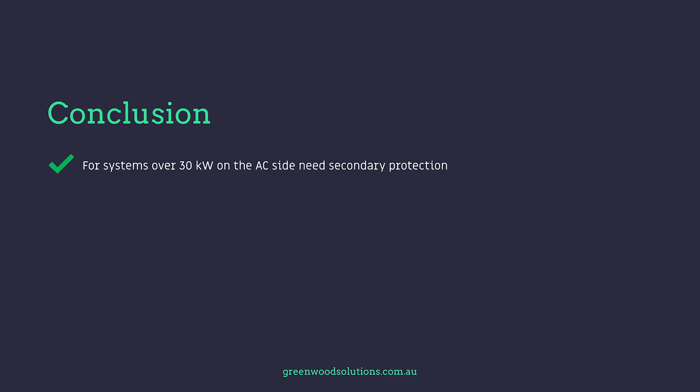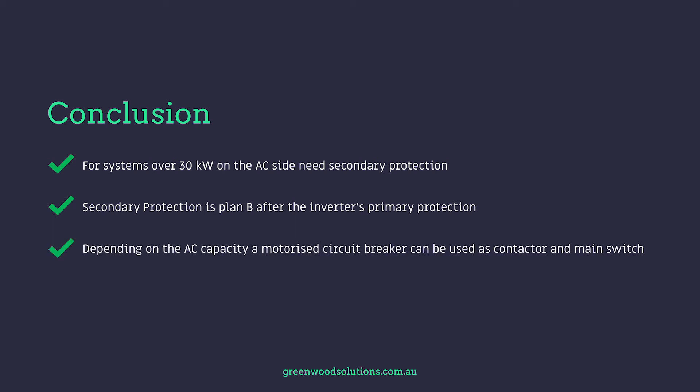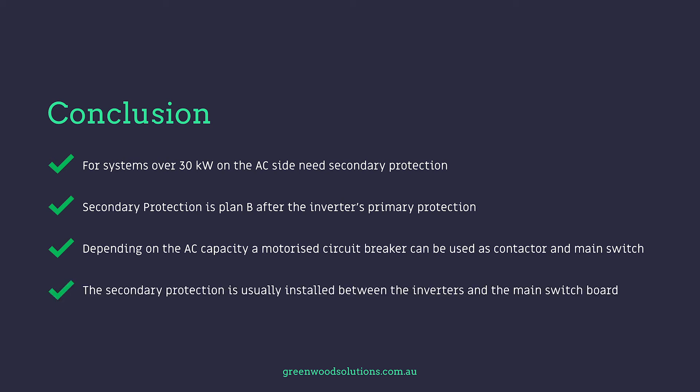Conclusion: systems over 30 kilowatts on the AC side will need secondary protection. Secondary protection is plan B after the inverter's primary protection. Depending on the AC capacity, a motorized circuit breaker can be used as contactor and main switch. The secondary protection is usually installed between the inverters and the main switch board. Thanks for watching our presentation on secondary protection boards. If you have any questions, inquiries, please feel free to drop us a line. Thanks very much for watching.